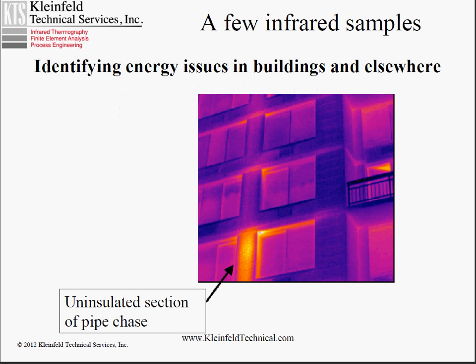Infrared can be used for energy issues in buildings and elsewhere. This image of the exterior of a high-rise in New York shows one floor's worth of a column containing a pipe chase where they neglected to insulate the pipe chase. You can also look at the interior of buildings to identify issues of failed or missing insulation, and that's a very common application.